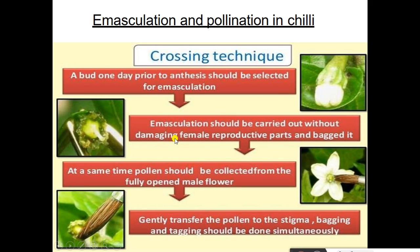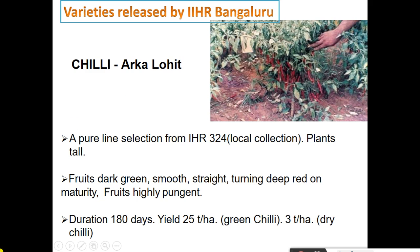Emasculation and pollination in chili by crossing technique: see the picture — the bud. Prior to anthesis, select buds for emasculation just at the opening of the bud — one day previously we select the bud. Emasculation should be carried out without damaging female reproductive parts; then bag it. At the same time, pollen should be collected from the fully opened male flower. Gently transfer the pollen to the stigma; bagging and tagging should be done simultaneously.